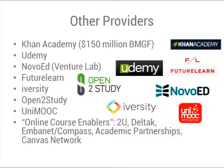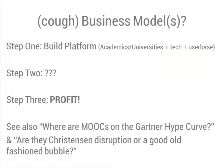Khan Academy received a $150 million grant from the Bill and Melinda Gates Foundation. So one of the questions to get to grips with today is: what's the business model? I regard it as the South Park model — build platform, step 2 who knows, step 3 profit — though it seems to be a good way of getting VC funding. We should also mention the Gartner Hype Curve, and consider whether MOOCs are a bubble or truly a disruptive innovation in the Christensen sense.